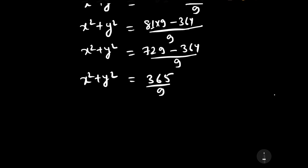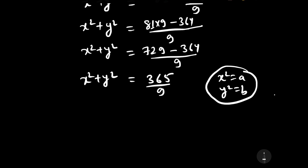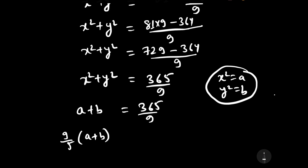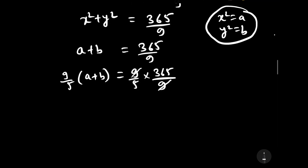Since x² = a and y² = b, we have a + b equals 365/9. To find (9/5)(a + b), we multiply both sides by 9/5: (9/5)·(365/9) equals 365/5 equals 73. Therefore (9/5)(a + b) equals 73, which is one of the required answers.